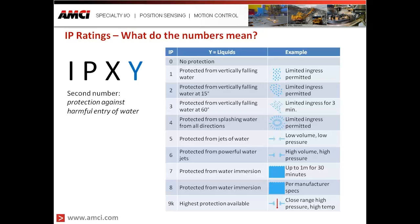Just like with the solids, the numbers start at zero and increase all the way to 9K. Looking at the chart, protection levels one through three cover limited entrance or no entrance of liquids, whether that liquid is falling vertically or at a particular angle — a practical example here would be rain or blown rain. When we look at an IP rating of four, we see protection from splashing water from all directions. A practical example would be something like a ship near shore with waves splashing, water crashing, or maybe a keyboard with coffee spilled on it — you want protection from splashing liquids.